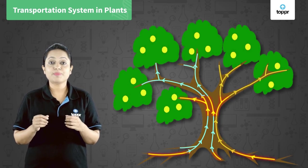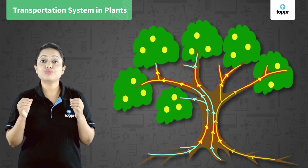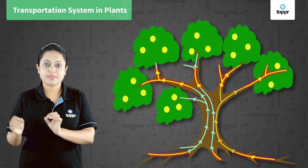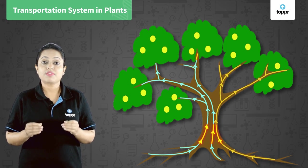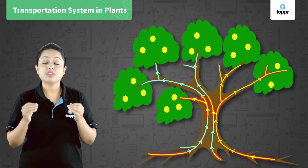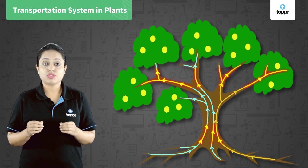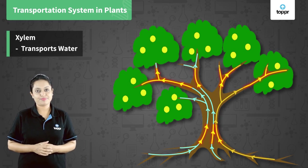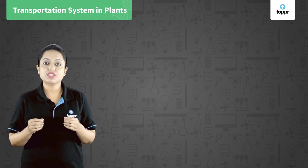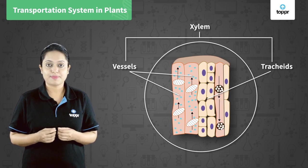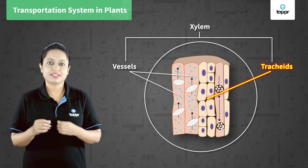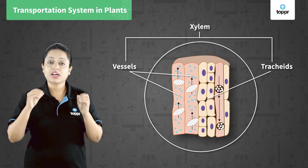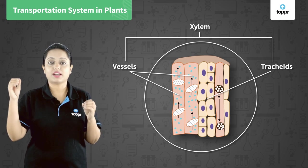Plants need to transport water from the roots to the leaves, and they do so with the help of a transportation tissue. This tissue, which is used to transport water and dissolved minerals, is known as xylem tissue. The xylem tissue consists of two types of cells: vessels and tracheids. These are elongated cells which form a continuous column for water conduction.